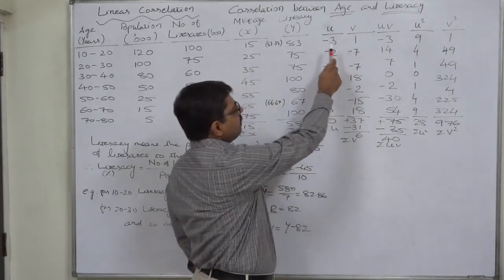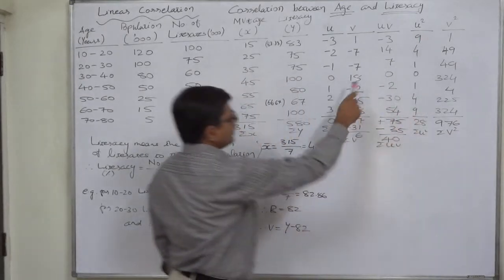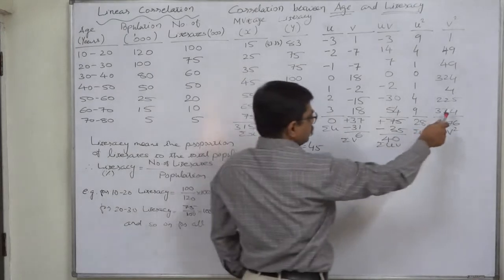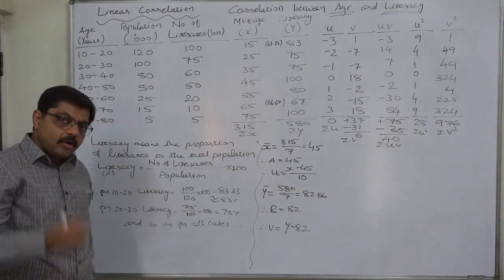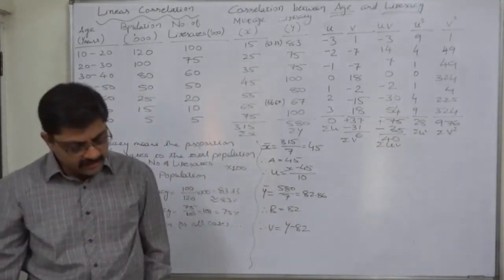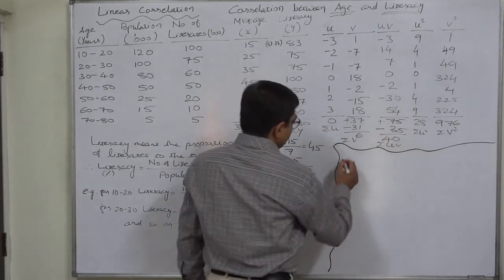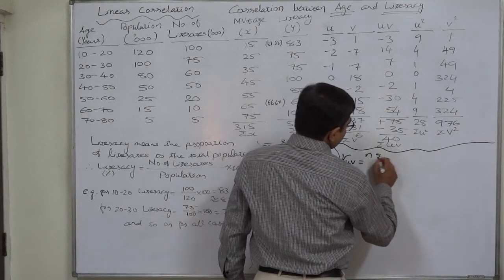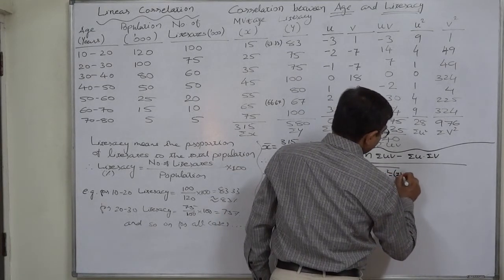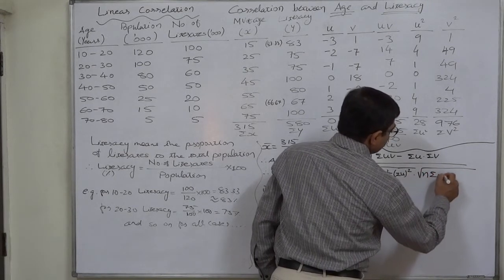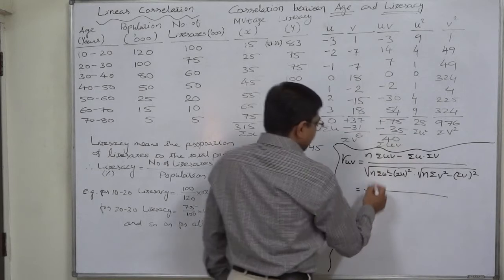Now we calculate the required columns. The column uv is the product of u and v — for example, (−3)×1, (−2)×(−7), (−1)×(−7), and so on — giving a total of 40. The summation of u² comes to 28, and the summation of v² comes to 976. We now have all five required summations: Σuv, Σu, Σv, Σu², and Σv², so we can apply the correlation formula.